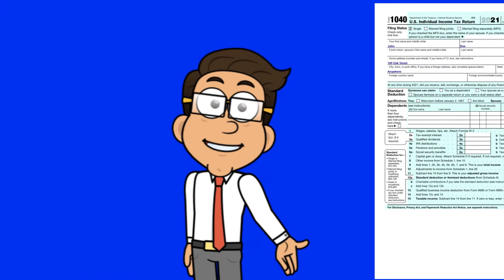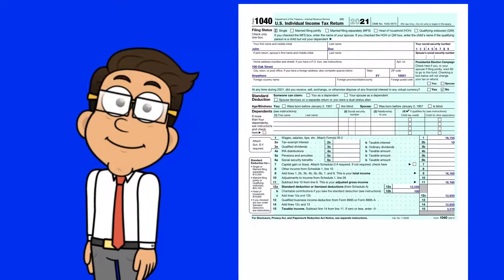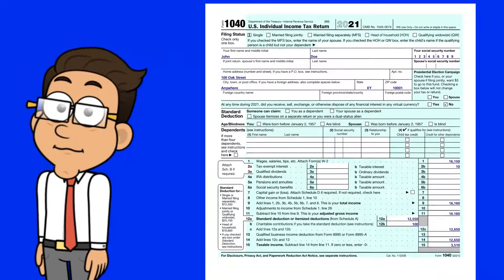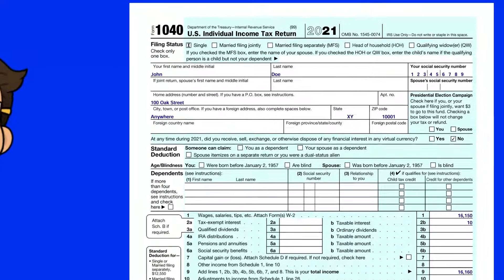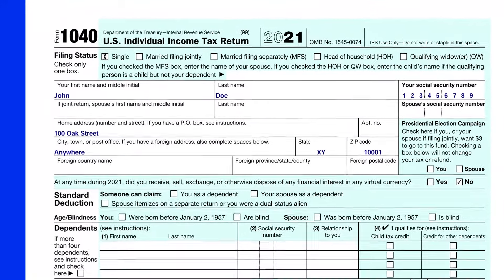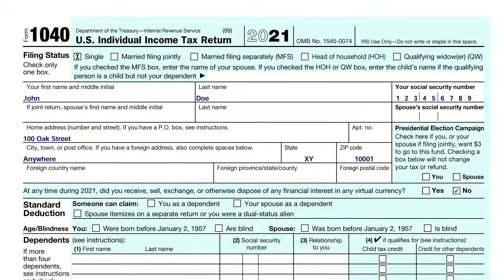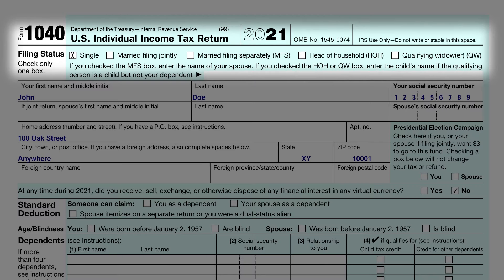Now let's take a look at the details of the example tax form to see how it looks. Here we will step through some of the more common filled-in lines for the 1040. This is Form 1040 U.S. Individual Income Tax Return for the year 2021. This example form has been filled out for John. He is single, so for filing status he has checked the single box.